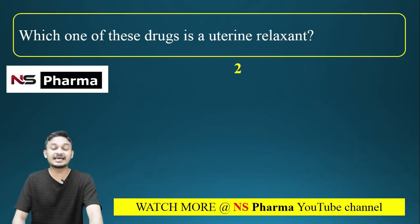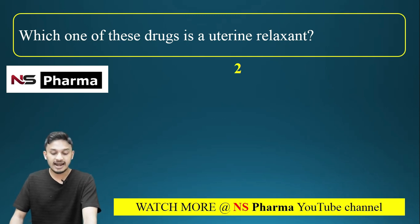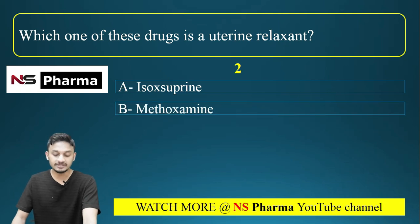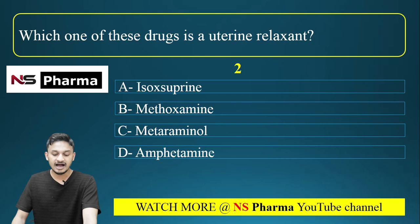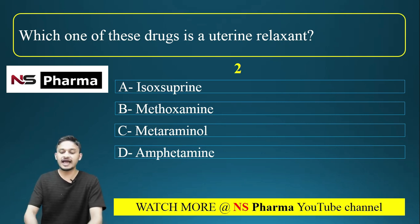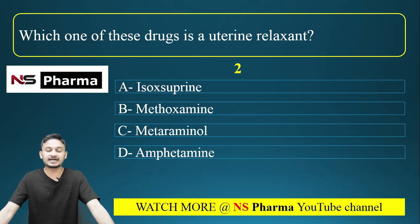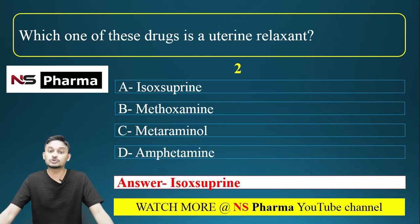Question number 2: Which one of these drugs is a uterine relaxant? Options are: option A, isosuprine; option B, methoxamine; option C, metaraminol; option D, amphetamine. The correct answer is option A, isosuprine.